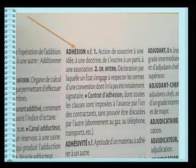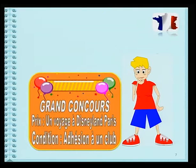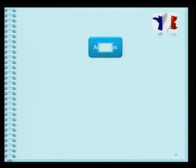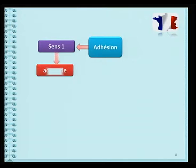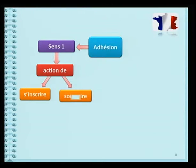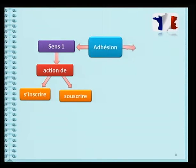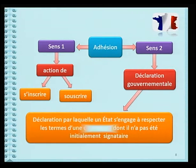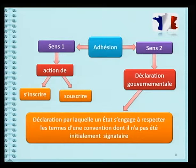Adhésion veut dire action de s'inscrire. Tu dois t'inscrire à un club littéraire pour participer à ce concours. Mais tu as bien vu tout ce que le dictionnaire propose pour expliquer ton mot. Il y a d'abord le sens 1, qui veut dire action de s'inscrire. De souscrire. Le dictionnaire permet d'élargir ton vocabulaire. Il te montre le synonyme du mot. Le synonyme d'un mot, c'est un autre mot qui a la même signification que celui que tu cherches. Le sens 2, c'est une déclaration gouvernementale d'une convention internationale. Le contexte te permet d'utiliser celui qui convient le mieux, et c'est celui de faire l'action de s'inscrire.